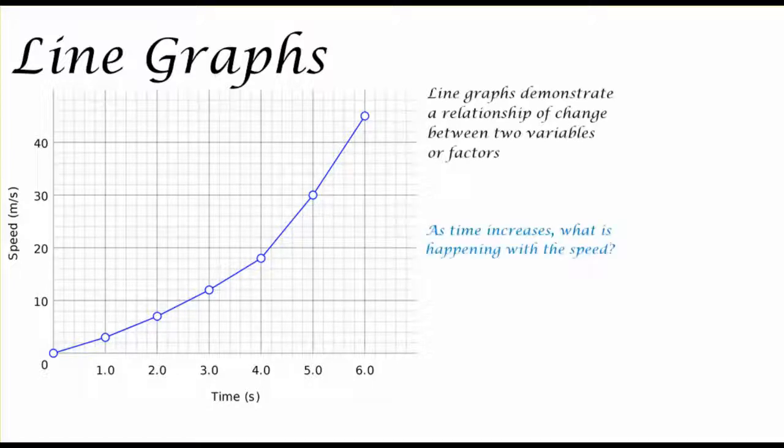We're able to look at this information to then think about the question, as time increases, what is happening with speed? Well, there's nothing to calculate here, but think about it. As time is going forward, what's happening to speed? We can give the simple answer that the object is getting faster. It's important to consider that line graphs don't always have to be in seconds and that sometimes line graphs can even span across years to show information over those times.